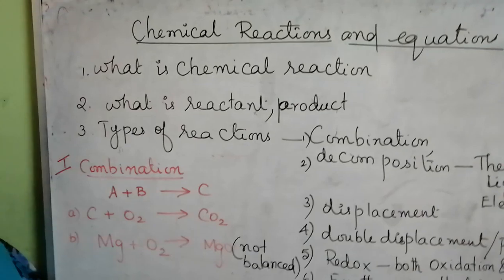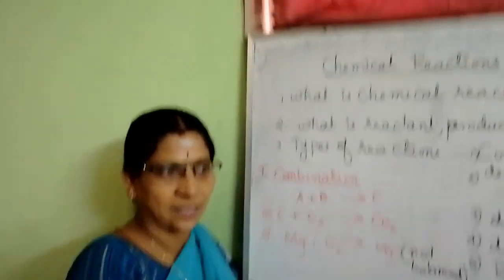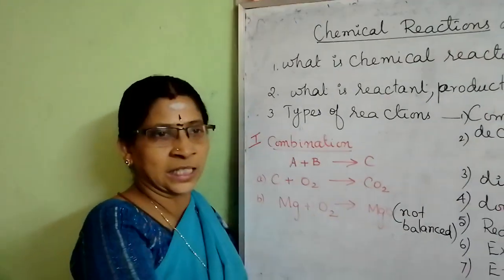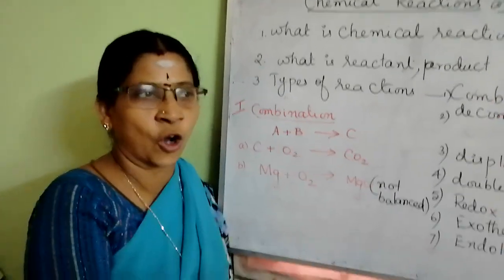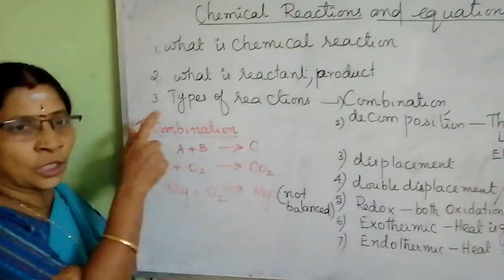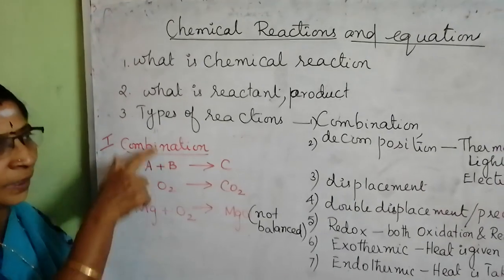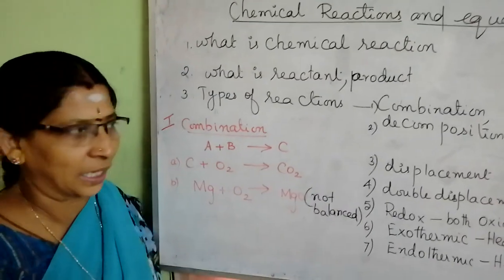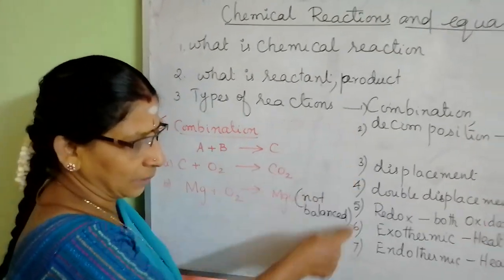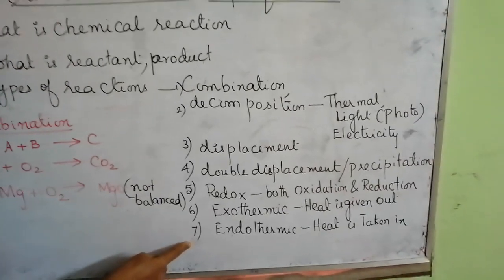The substance, what we are taking as food, it is a reactant. What it is changing after the chemical reaction, what we are getting is called the product. Now we are going to learn in this chapter various types of chemical reactions. There are seven types of chemical reactions which we are going to learn in this lesson.